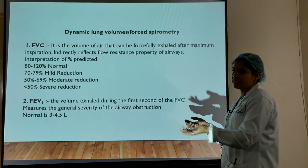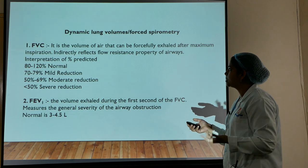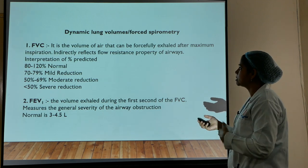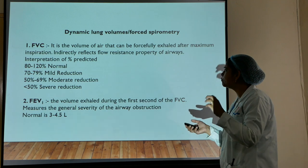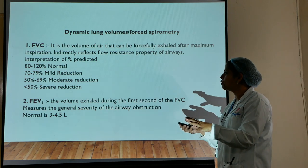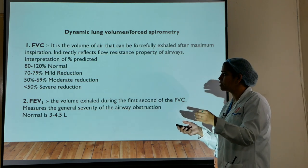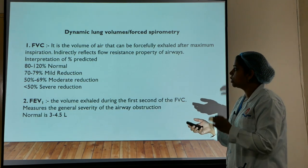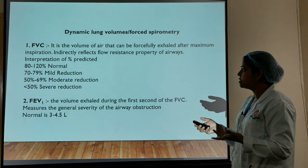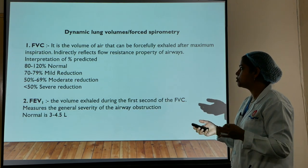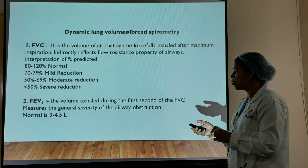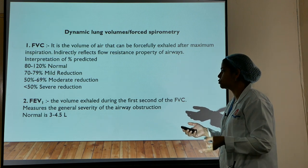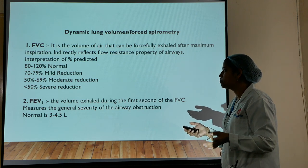Forced vital capacity (FVC) is the volume of air that can be forcefully exhaled after maximum inspiration, and it indirectly reflects the flow resistance properties of the airways. Interpretation is as a percentage of predicted value: 80–120% is normal, 70–79% is mild reduction, 50–69% is moderate reduction, and less than 50% is severe reduction.